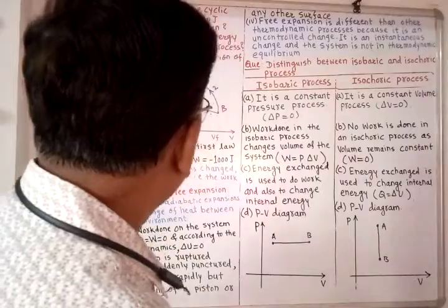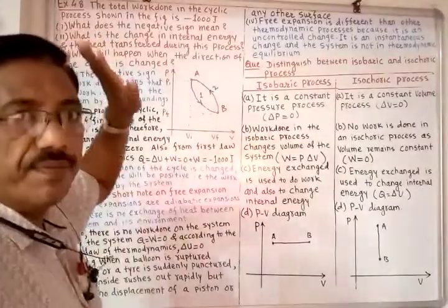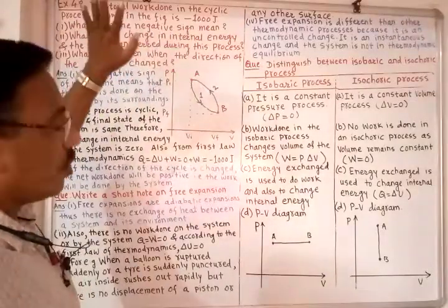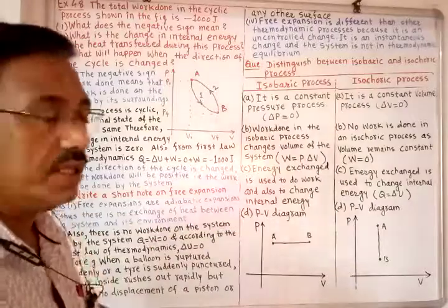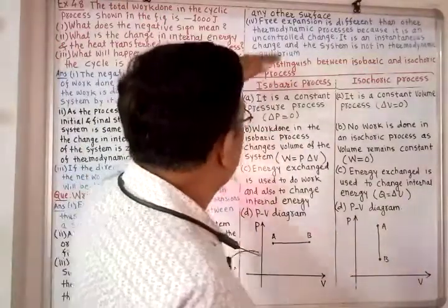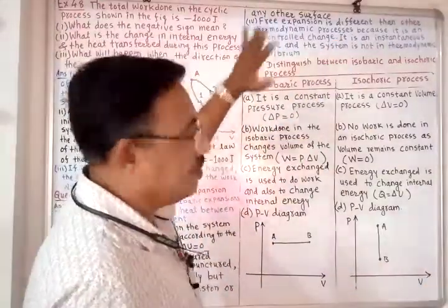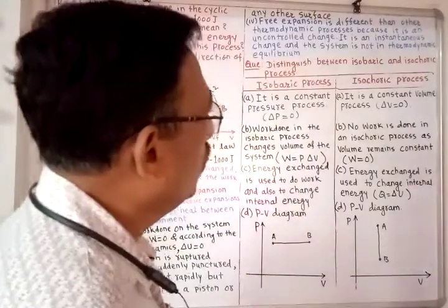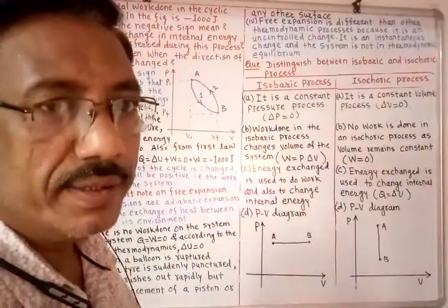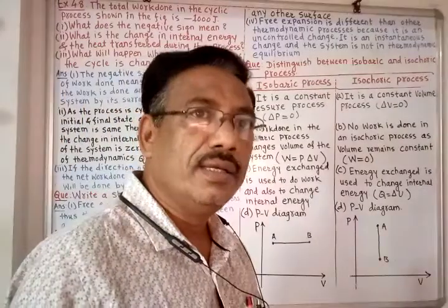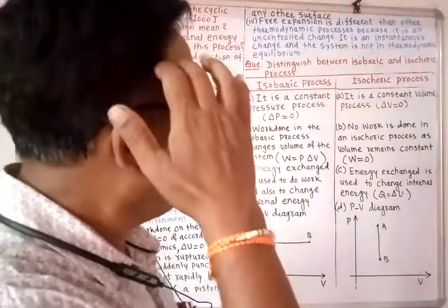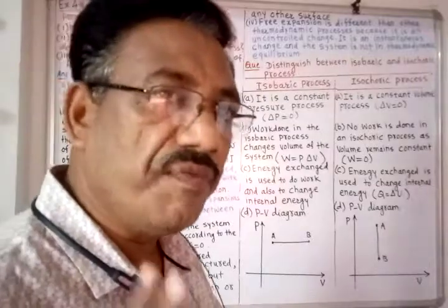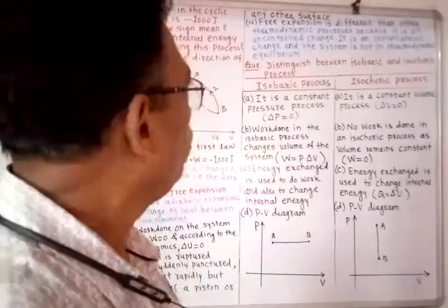Hello students, today we are going to see Example 4.8, which is already solved in your textbook. It is based on the cyclic process and a new process, free expansion, that we are going to see today. After two or three more numerical examples, we are going to complete our fourth chapter and will start the fifth chapter.